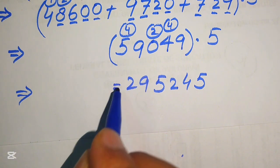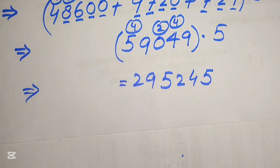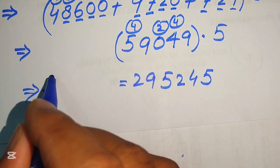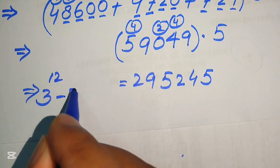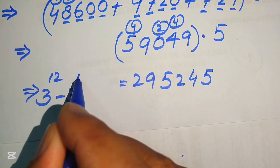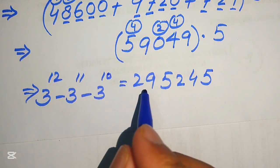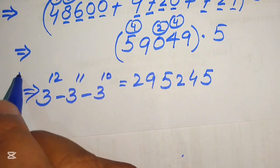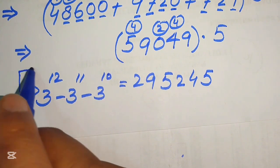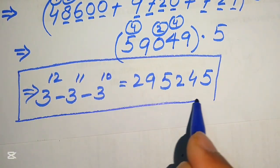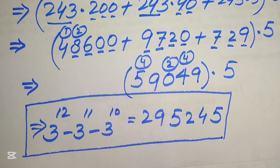This is the final simplified form of the given question. Finally, 3 to the power of 12 minus 3 to the power of 11 minus 3 to the power of 10 equals 295,245. This is our final answer. Thank you so much for watching this video — please subscribe to my channel for more exciting videos.